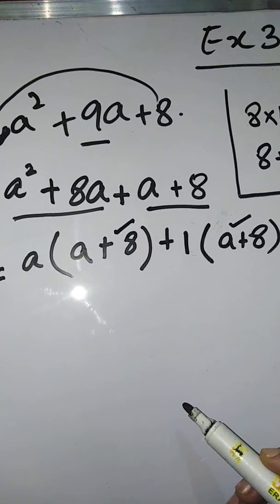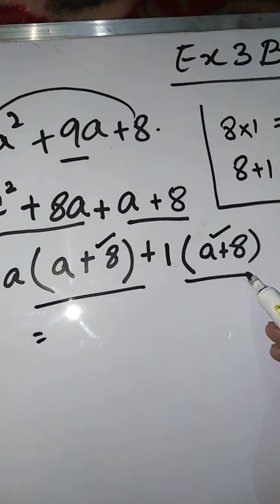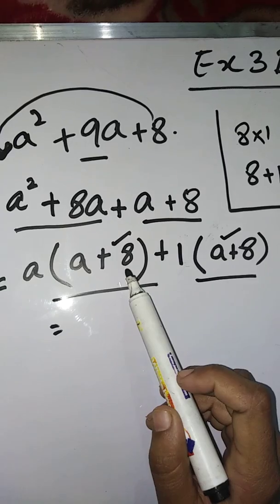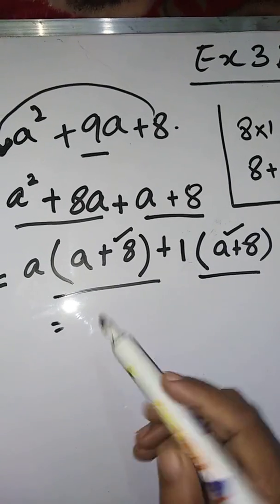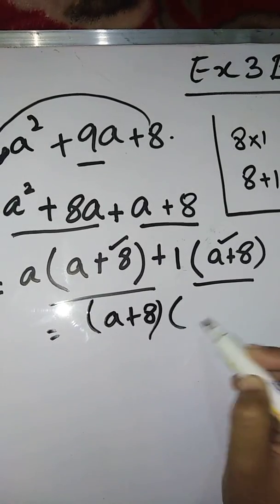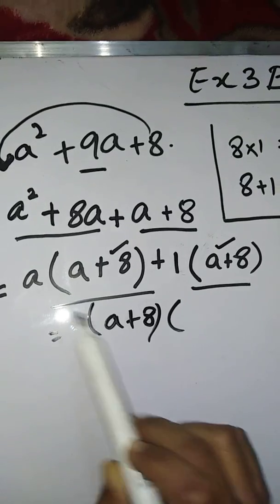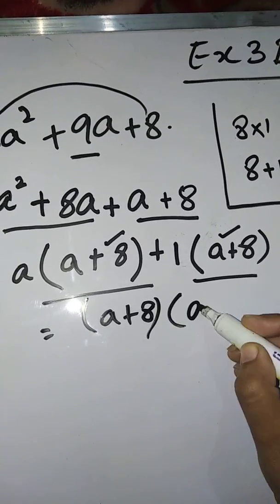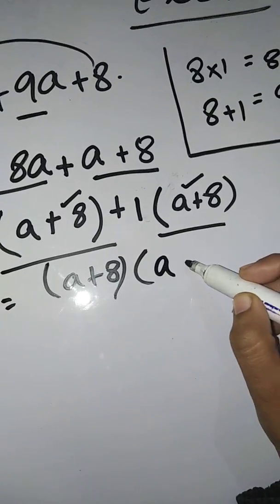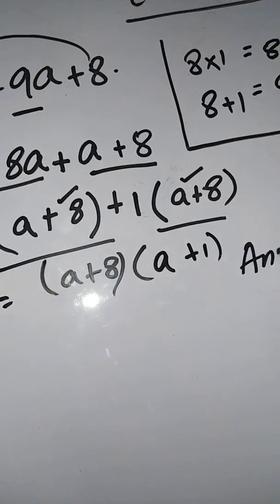Both brackets are the same — (a + 8) — which confirms the sum is correct. Now take (a + 8) as common from both terms. What is left is a from the first term and 1 from the second. So the final answer is (a + 8)(a + 1).